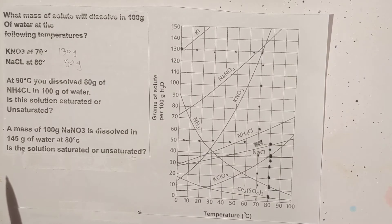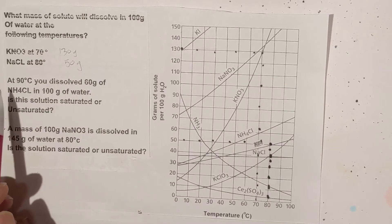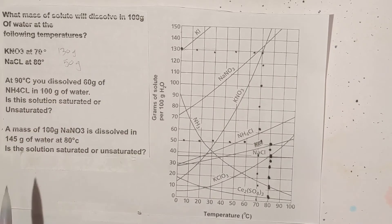Now let's look at another example. It says at 90 degrees Celsius you dissolve 60 grams of NH4Cl in 100 grams of water. Is this solution saturated or unsaturated? Well let's figure out how to do that.